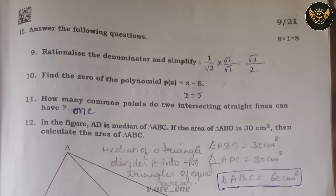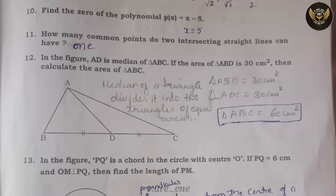Second main section — short answer questions. Question 9: Rationalize the denominator and simplify 1/√2. Rationalizing the denominator by √2, we get the answer √2/2. Question 10: Find the zeros of the polynomial p(x) = x - 5. The answer is x = 5. Question 11: How many common points do two intersecting straight lines have? Only one.